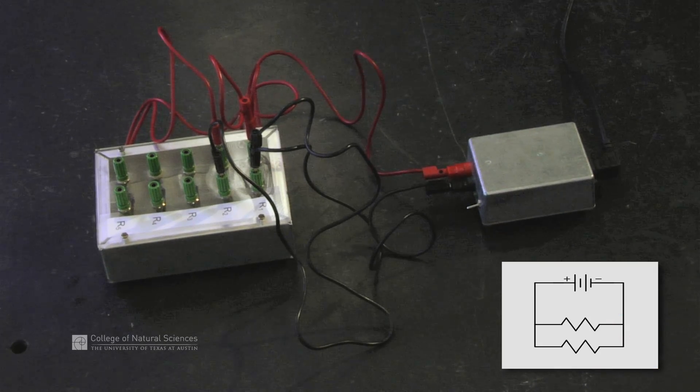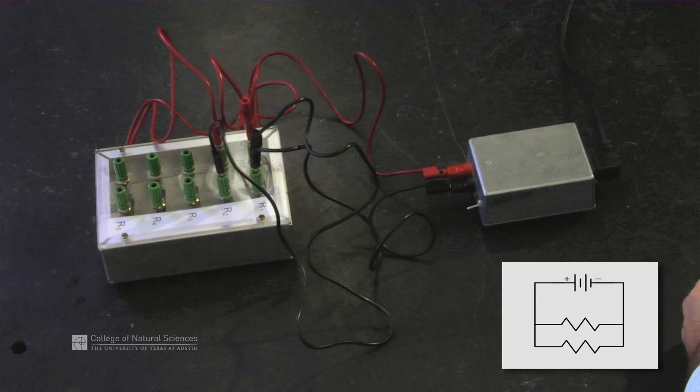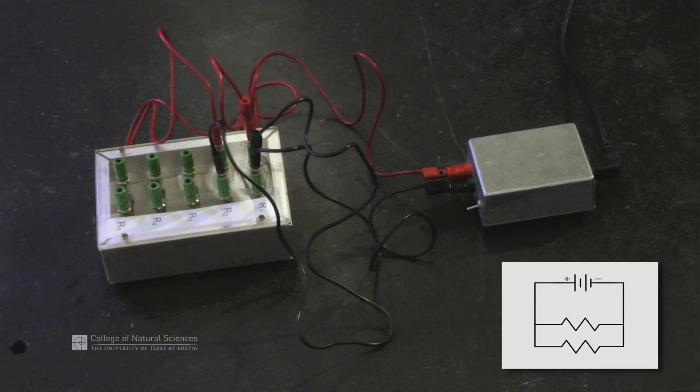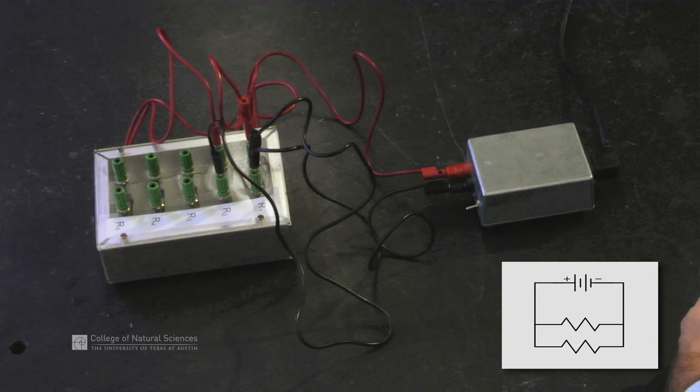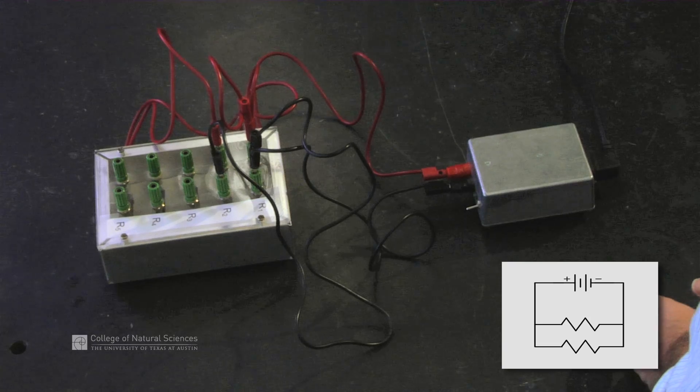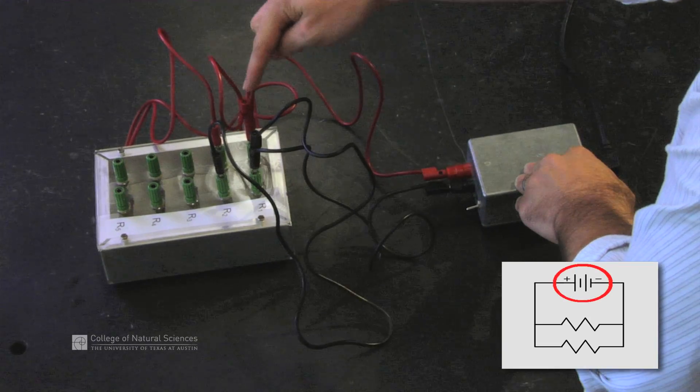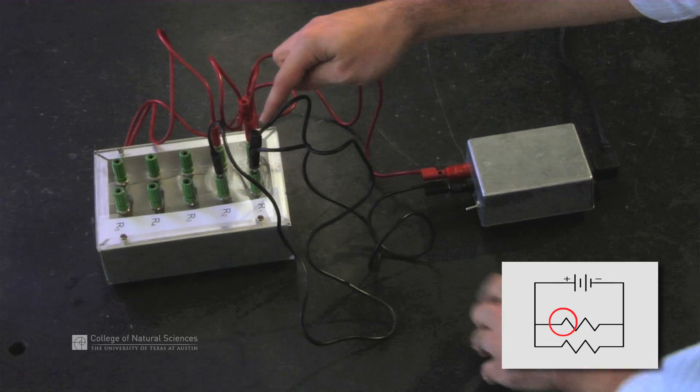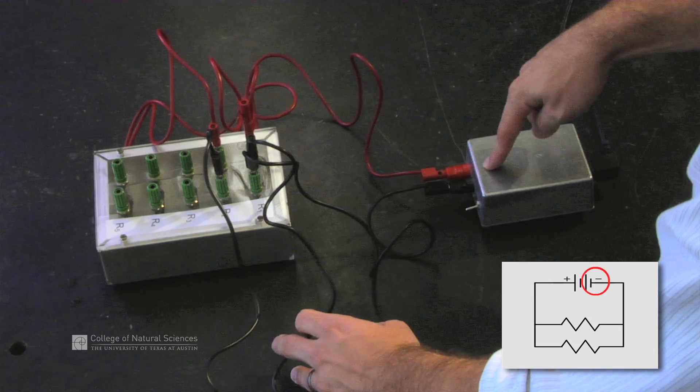Now, we have our circuit complete, but we are getting more complicated with our circuits, so we want to check to make sure that our circuit is correct in our setup. So, we go back and check. Power supply goes to the first resistor, through the first resistor, and back to the power supply.